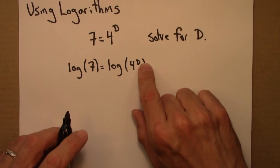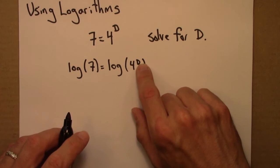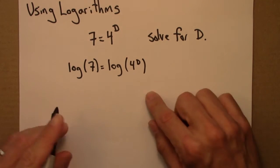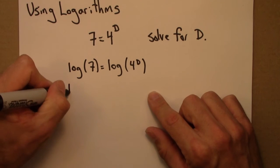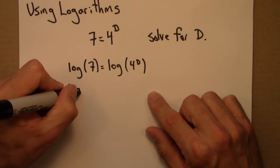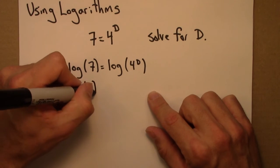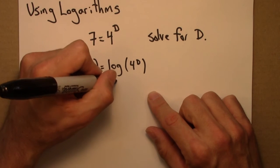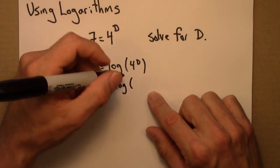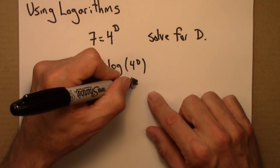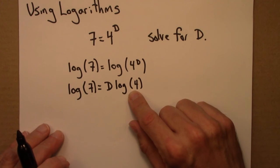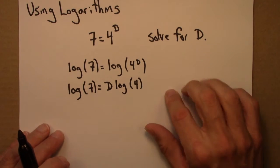Then I'm going to use the log exponent property that pulls the exponent downstairs out front. This gives us log 7 equals d times log 4, and then I can solve for d by dividing both sides of this equation by log 4.